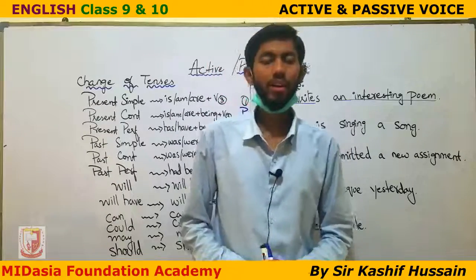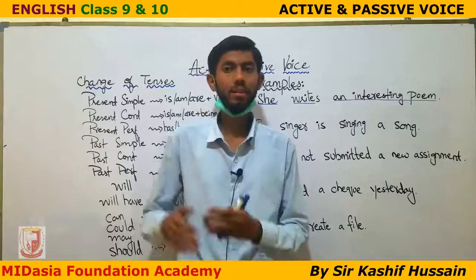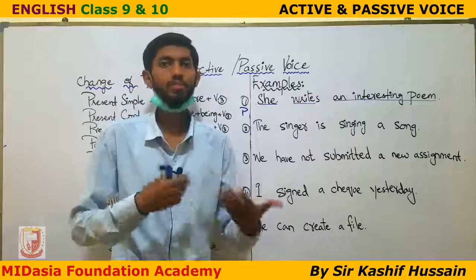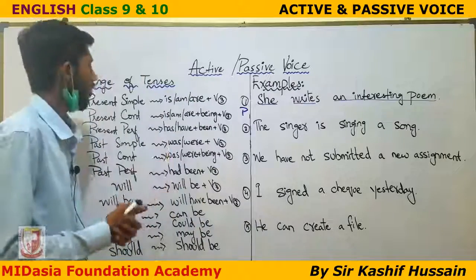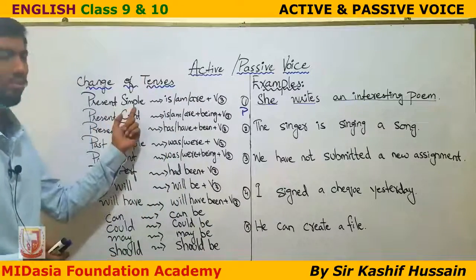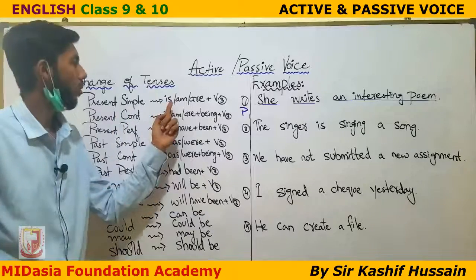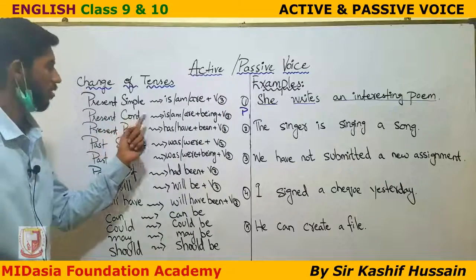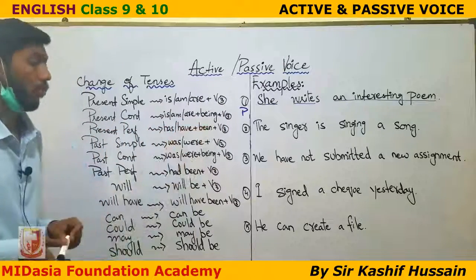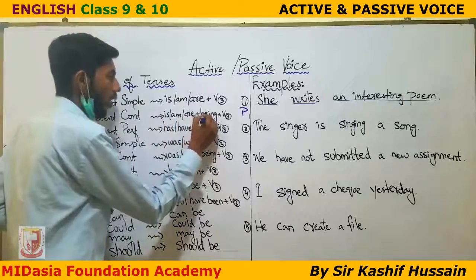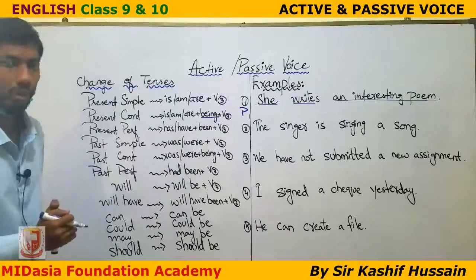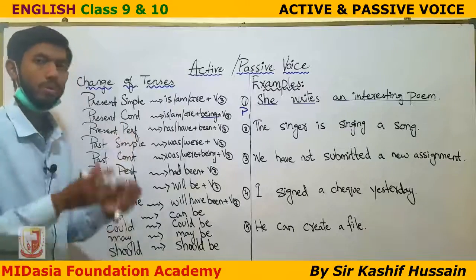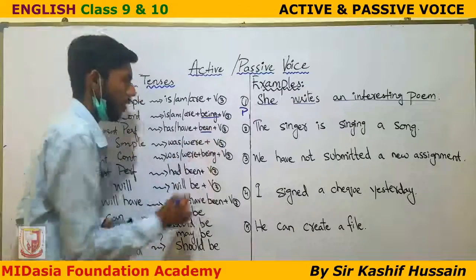Before discussing examples, let's look at the changes of tenses. When we make passive voice, we have to change the tense. If you have present simple tense, in passive voice you use 'is/am/are' plus the verb in third form. For present continuous tense, you use 'is/am/are being' plus the third form. For present perfect tense, you use 'has/have been' plus the third form.